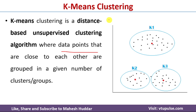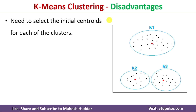Now we will understand what are the disadvantages of k-means clustering algorithm. The very first disadvantage is that whenever we want to apply k-means clustering on a given dataset, we need to identify the initial centroids. Based on the number of clusters, we need to identify that many centroids before we can continue. Identifying the initial centroid is a big issue — I have discussed this in another video, the link is in the description below.